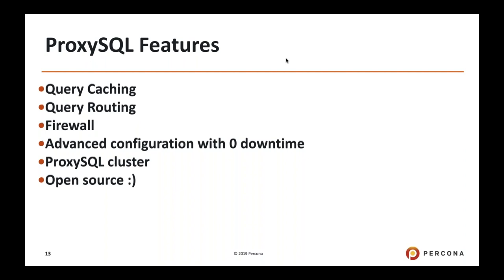With query routing you can have dedicated nodes for reads. For example, if you have an ETL job to run every day, you can assign that user to run on a dedicated node. You also get firewall capability, advanced configuration, and the ability to take down a node for maintenance and bring it back. ProxySQL now also supports clusterization, so it's no longer a single point of failure. And of course it's open source.